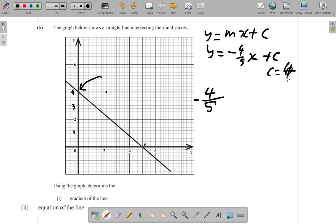So, you can see c is equal to four. So, the equation is y is equal to negative four-fifths x plus four.